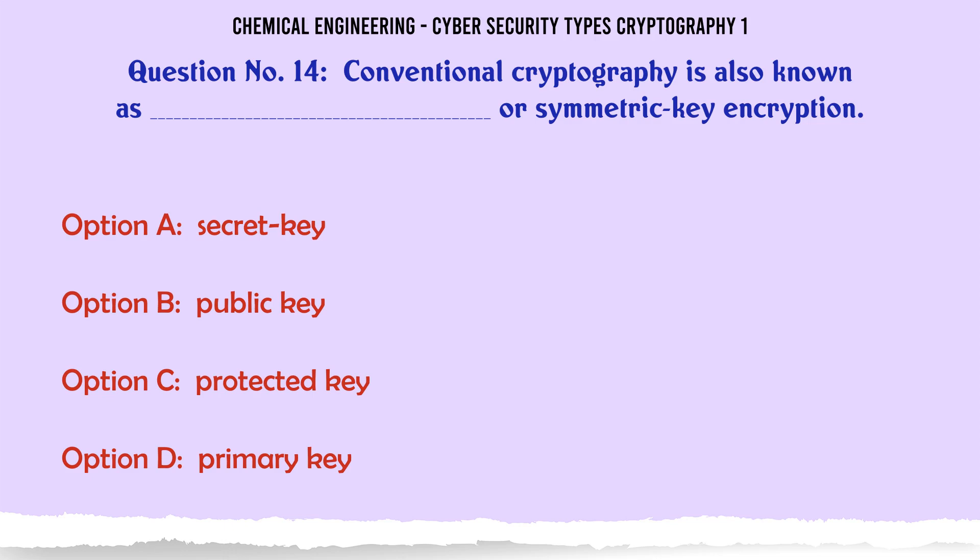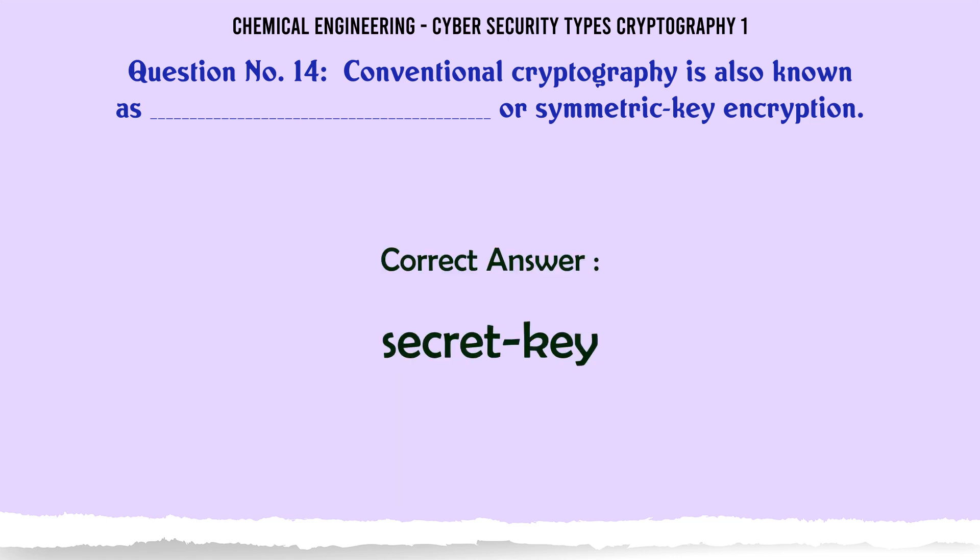Conventional cryptography is also known as or symmetric key encryption. A) Secret Key, B) Public Key, C) Protected Key, D) Primary Key. The correct answer is Secret Key.